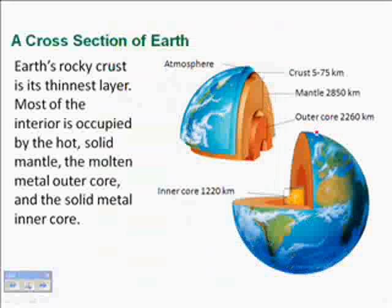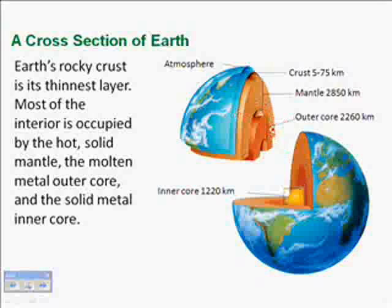Let's start with Earth's interior and the three main layers: the crust, the mantle, and the core. The core actually has two pieces — the outer core and the inner core. They're both at the center and both made mostly of iron. The outer core is liquid; it's so hot that it's melted iron. The inner core is still hot, but because of so much pressure from the outside, it's actually a solid.